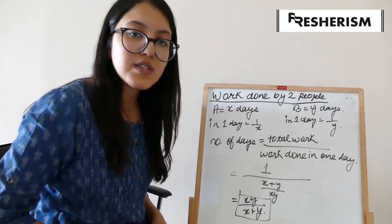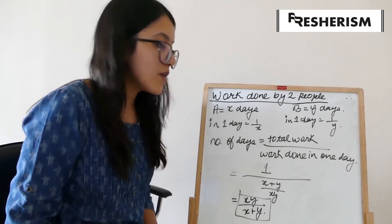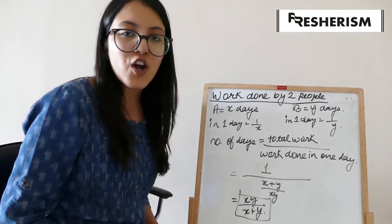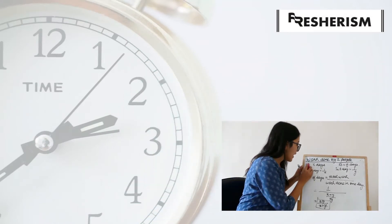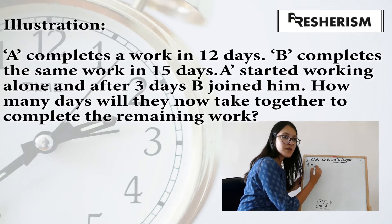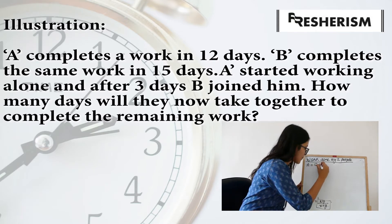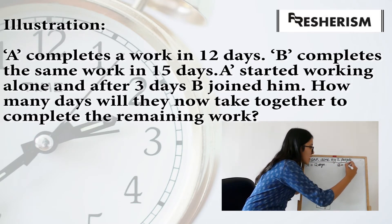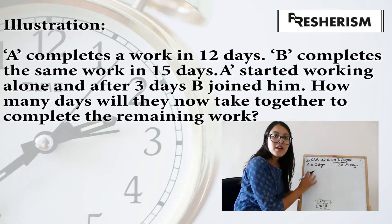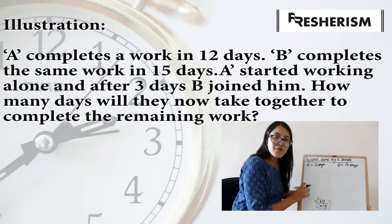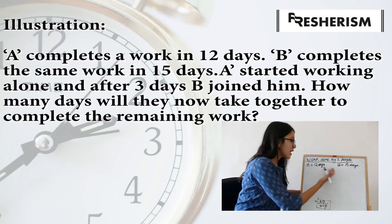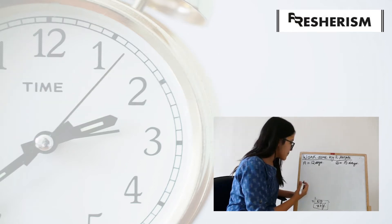It was easy, wasn't it? This formula is going to help you in solving further questions with other concepts as well. Take a note of this formula for sure. Let us now use this formula in an example. Let us consider that A can complete a certain amount of work in 12 days and B can complete the same amount of work in 15 days. But after 3 days, B joins in to help A complete the work. We are required to find how many days will be required to complete the work after B has joined A after 3 days.